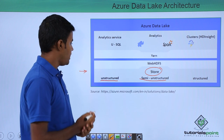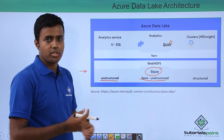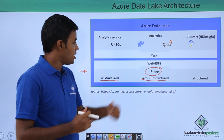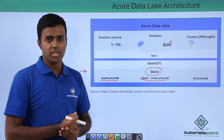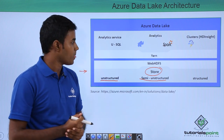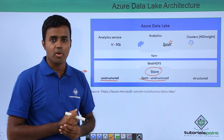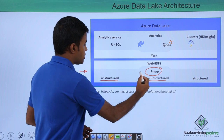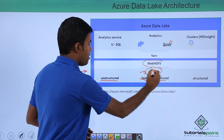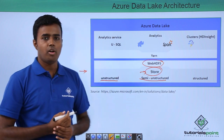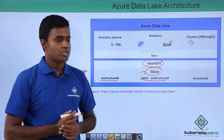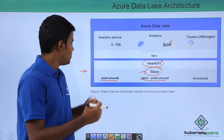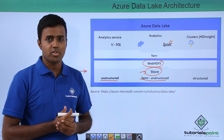Unstructured data is nothing but your Twitter tweets or any other data which really does not have any structure. Semi-structured data is probably your JSON data or XML data, and structured data is nothing but your relational data. The Azure Data Lake store is built on top of open source technology called WebHDFS, so you have a really good interface to communicate with the data stored in your Data Lake store.